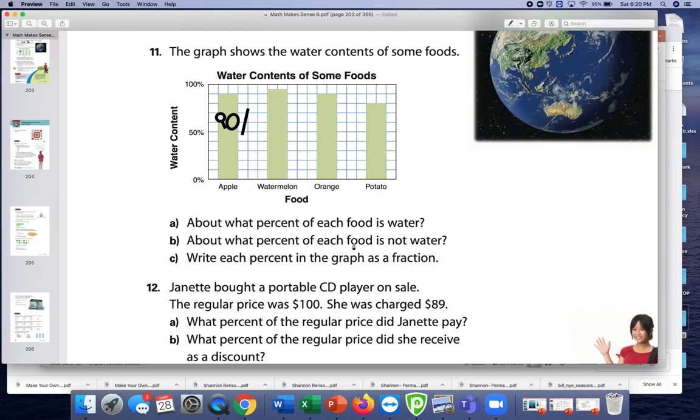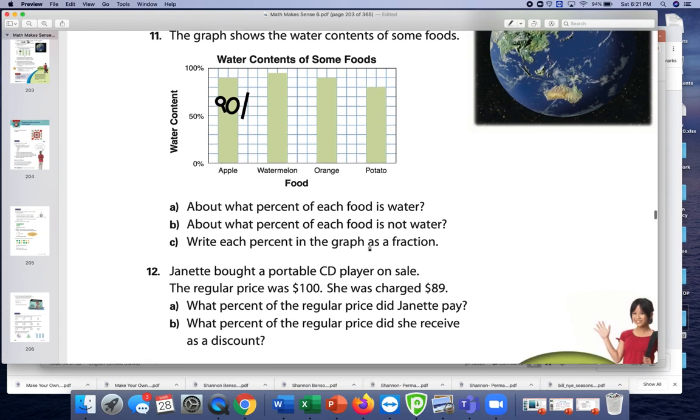So then how much of the percent of each food is not water? So that means we just have to do the opposite and subtract. So we should have 10%, 5%, 10%, and 20%. Write each percent in the graph in fraction form. That would be 90 over 100, 95 over 100, 90 over 100, and then 80 over 100. Great.